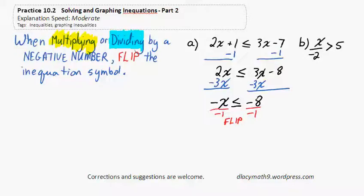Negative x divided by negative 1 is positive x. Negative 8 divided by negative 1 is positive 8. And because we divided by a negative number, change from less than or equal to to greater than or equal to. That's the answer.